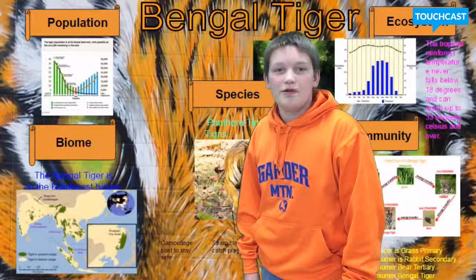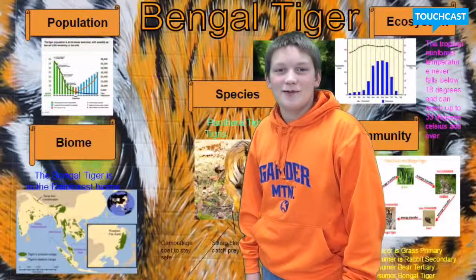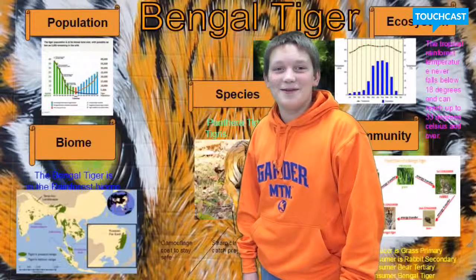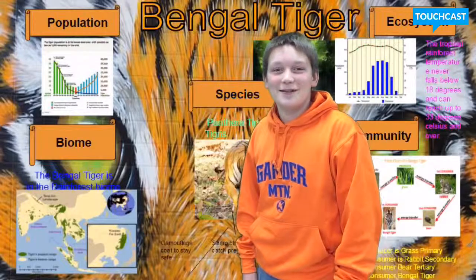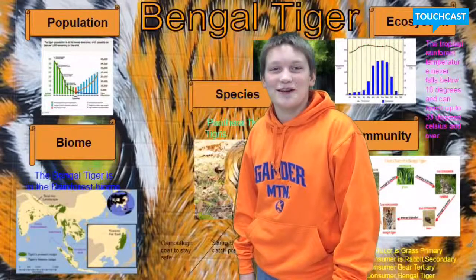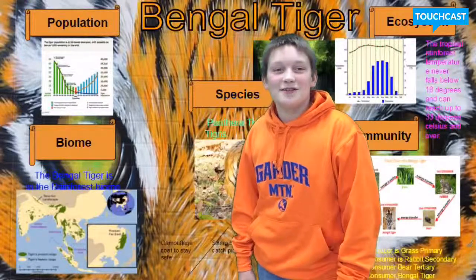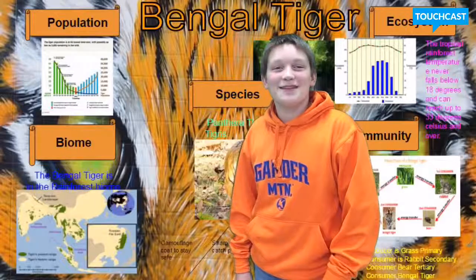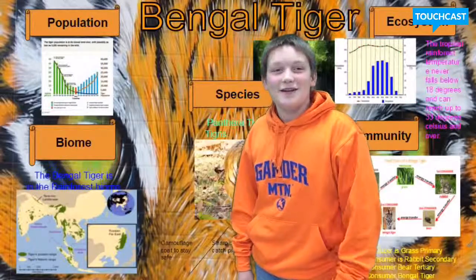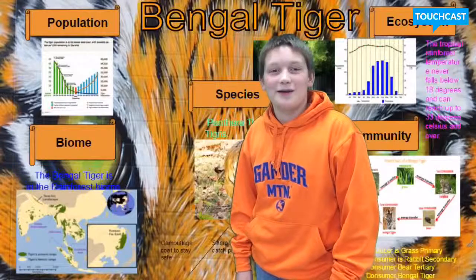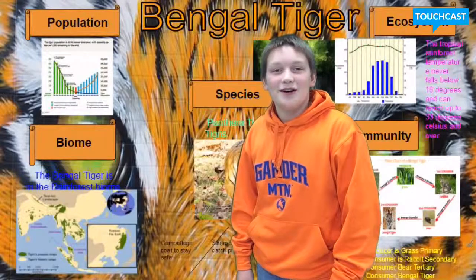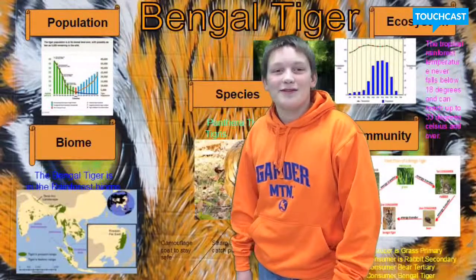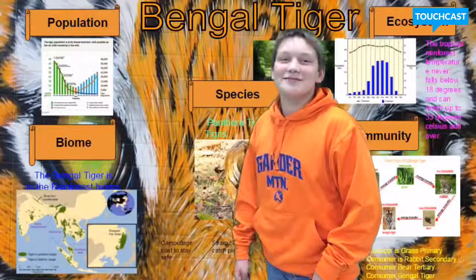Species. The male's total average length is 270 centimeters to 310 centimeters, including tail, while females measure 240 centimeters to 265 centimeters on average. The tails are typically 85 centimeters to 110 centimeters long. The male's range of weight is 397 pounds to 569 pounds, while females are 220 to 350 pounds. The scientific name for the Bengal tiger is Panthera tigris tigris.